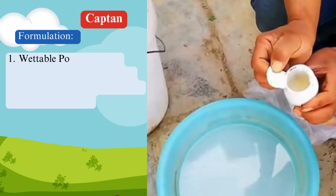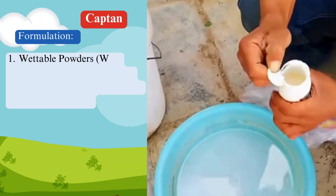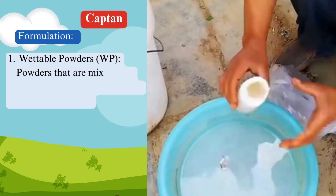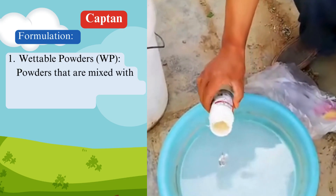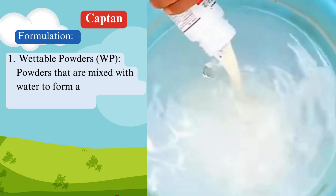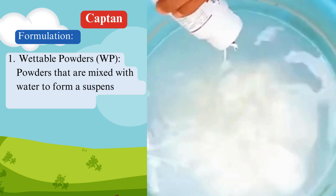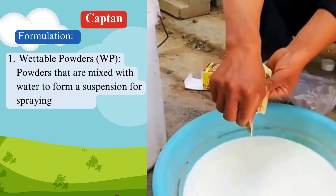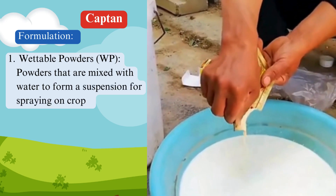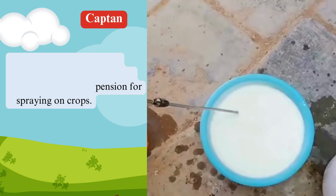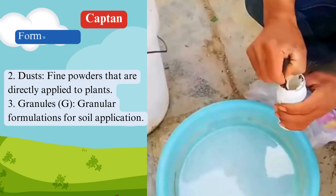Common formulations. Captan is available in several formulations to suit different application methods. 1. Wettable powders (WP): powders that are mixed with water to form a suspension for spraying on crops.